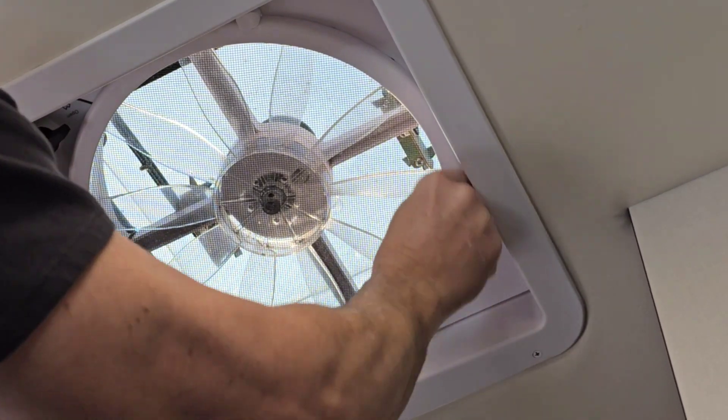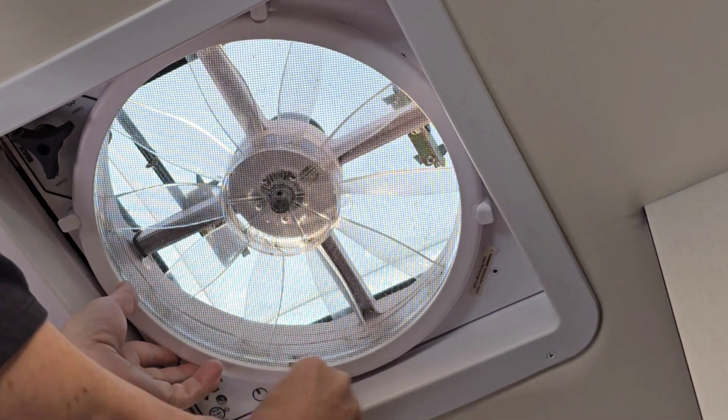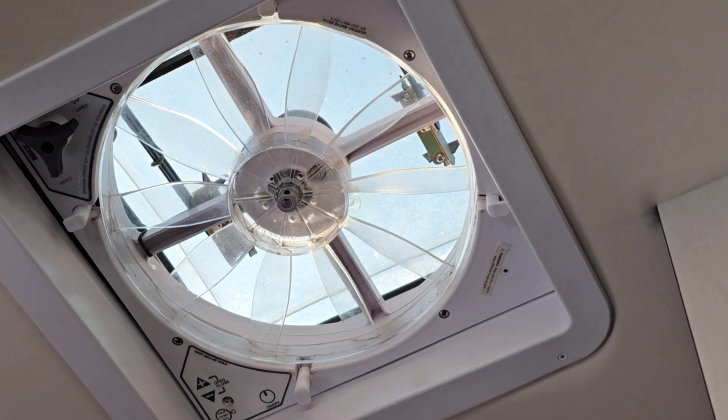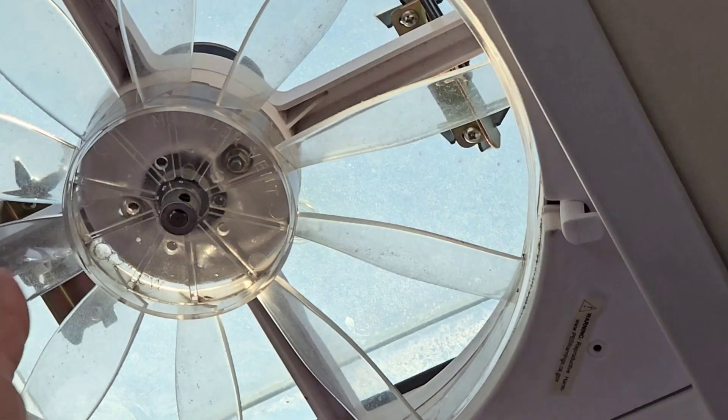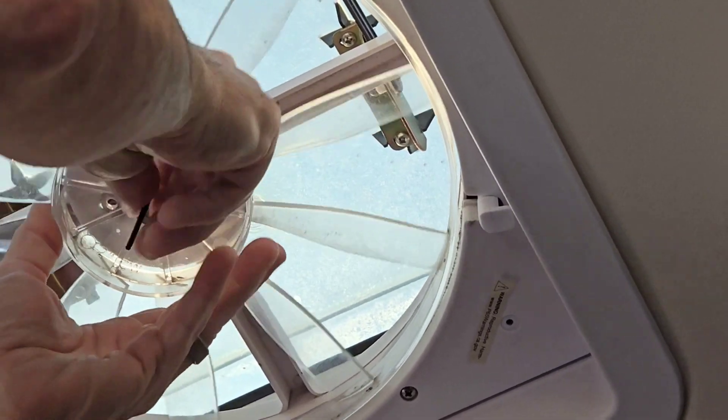The screened housing has four retainer clips. You rotate them 180 degrees and it's going to let that housing just drop straight down. After that, you're going to need an allen wrench to remove the set screw for the fan itself. It's not that tight, it comes right off.